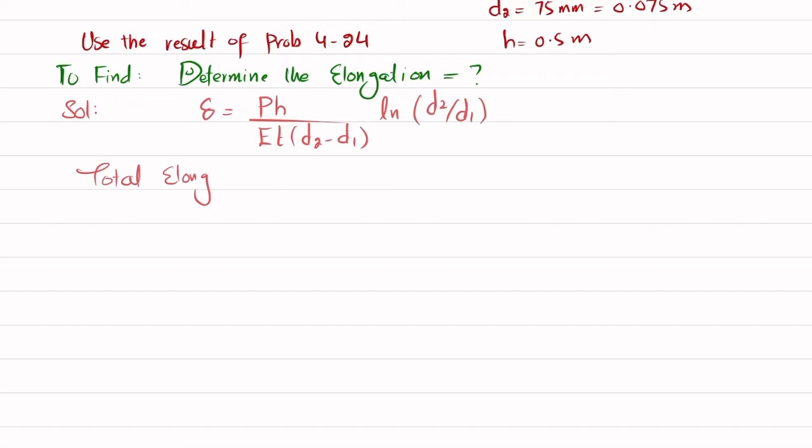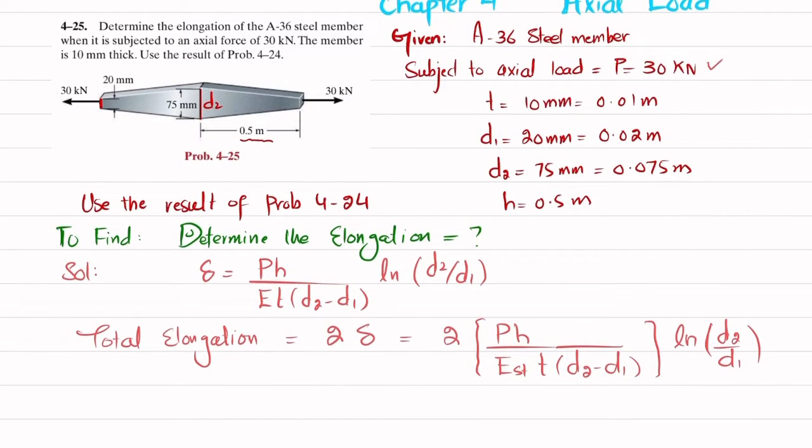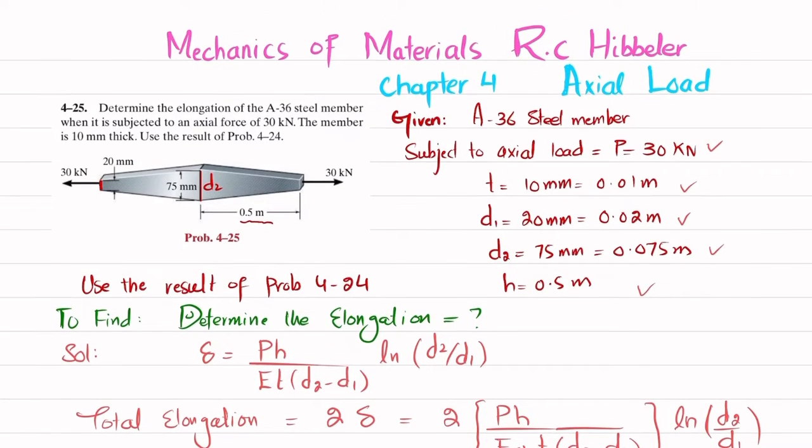So for that, our total elongation in this case will be equal to two times delta. You can put the value: 2 times P times h divided by E steel times thickness times (d2 minus d1) times ln of (d2 over d1). You have all the values - P, t, d1, d2, h. You do not have E for the steel member.